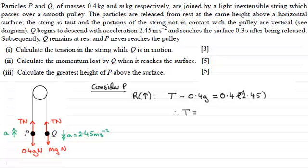So T is going to equal 0.4 multiplied by 2.45 plus 0.4 multiplied by g, and I'm going to take g as 9.8. And if you work this out, what you get for that tension is 4.9 newtons.